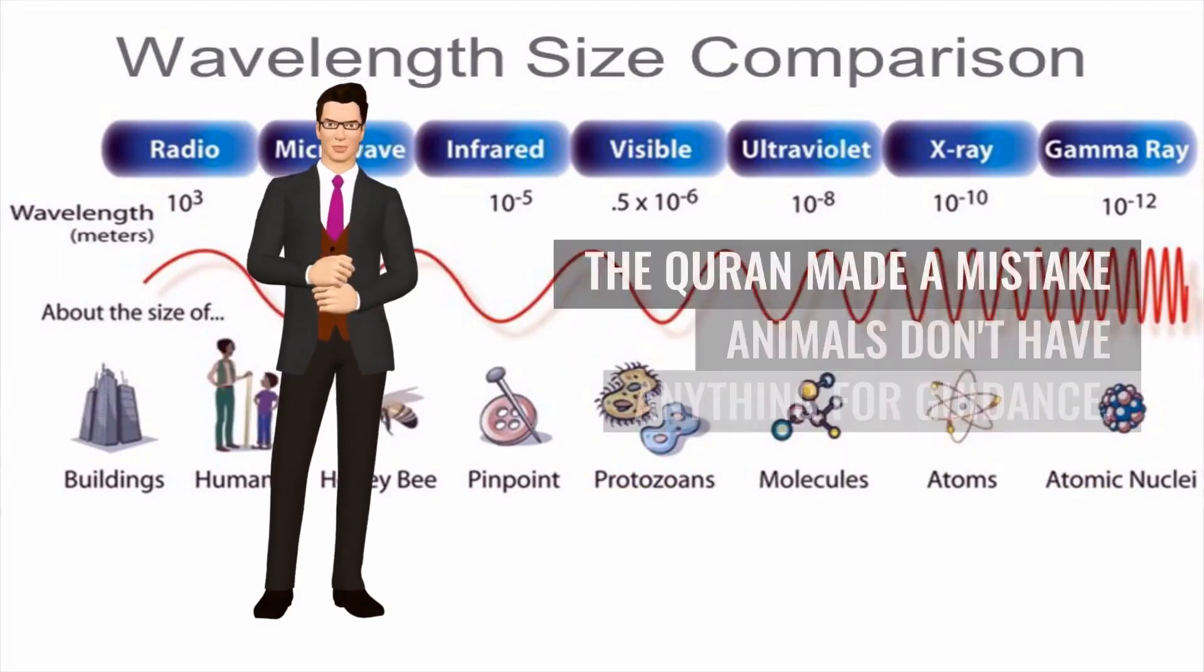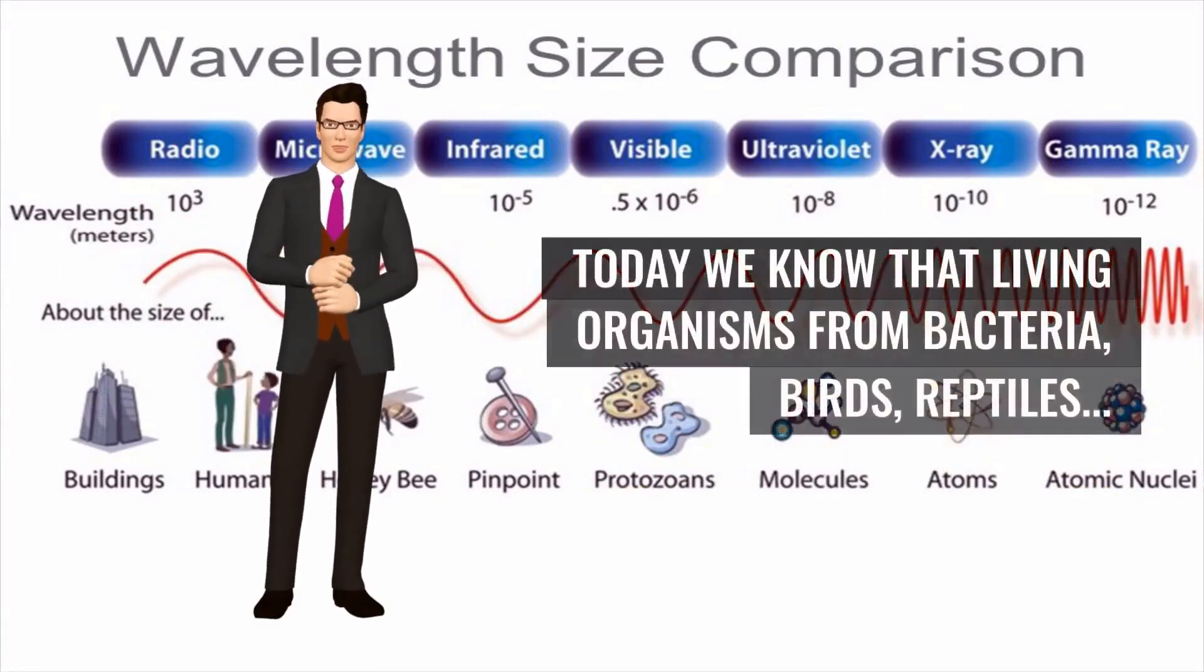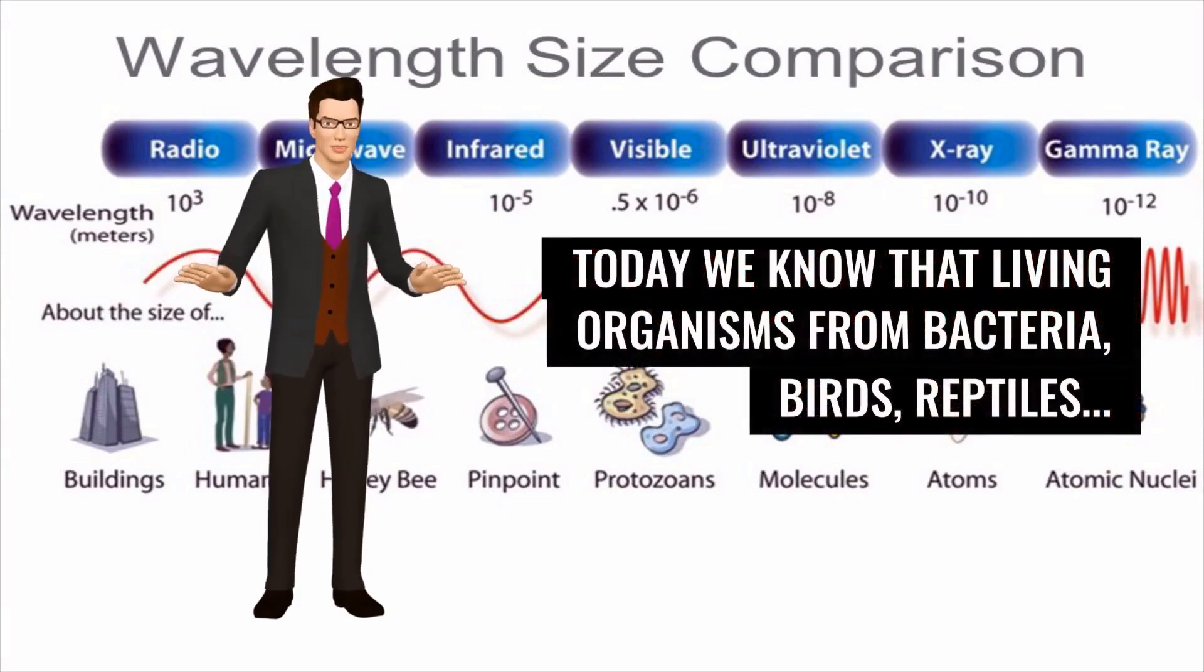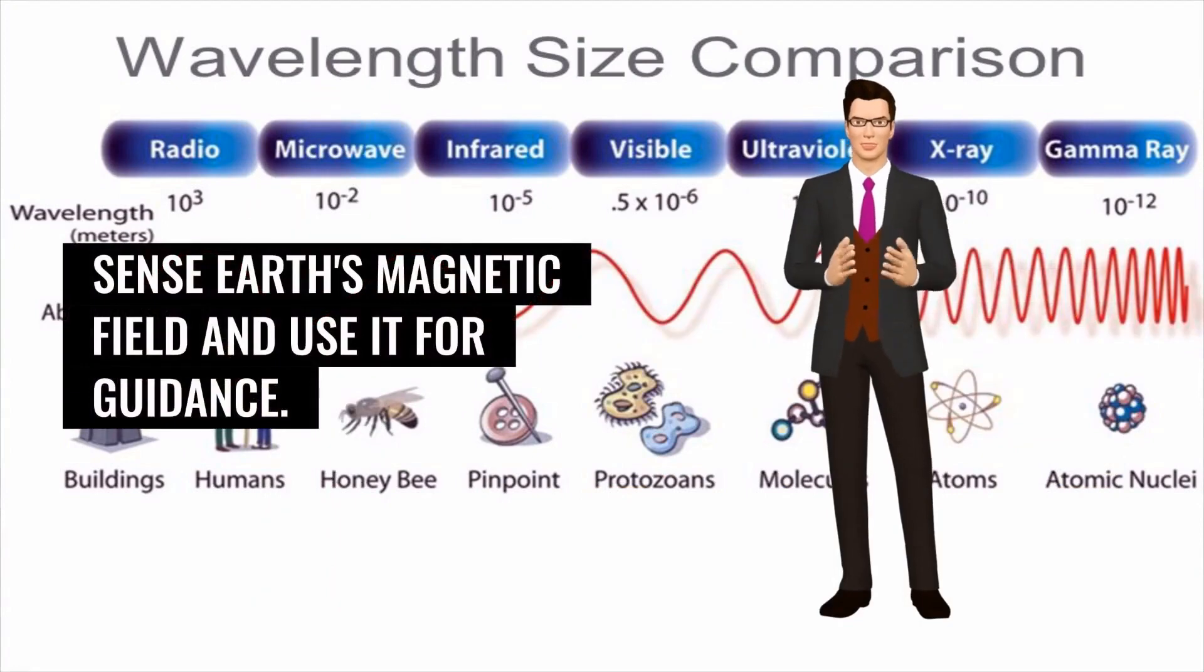Skeptics claim that whoever wrote the Quran made a mistake - animals don't have anything for guidance. Today we know that living organisms from bacteria, birds, and reptiles sense Earth's magnetic field and use it for guidance.